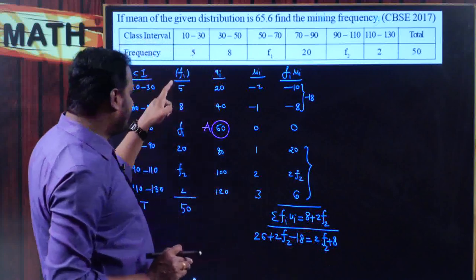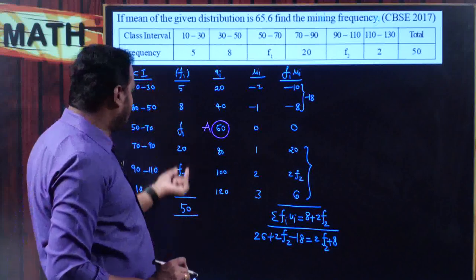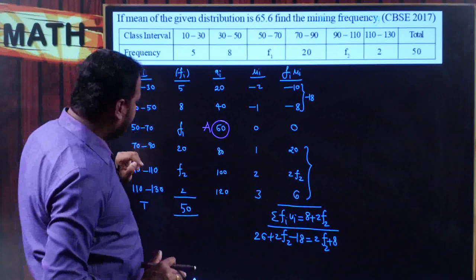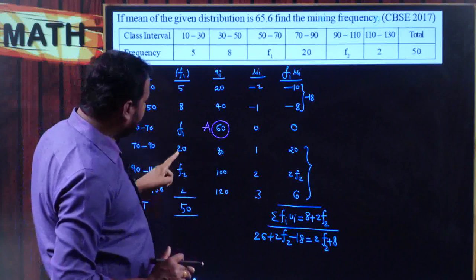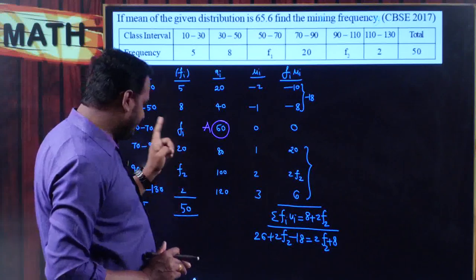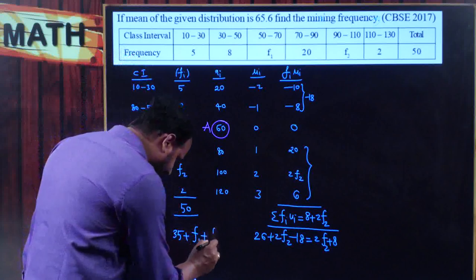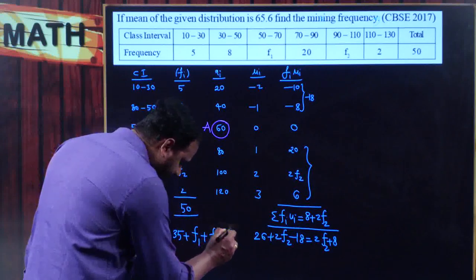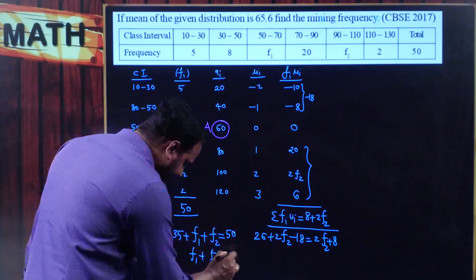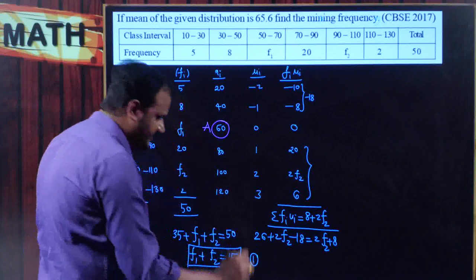Also, the sum of all frequencies equals 50. So 5+8+2+20 = 35, and 35 + f1 + f2 = 50, giving f1 + f2 = 15. This is our first equation.